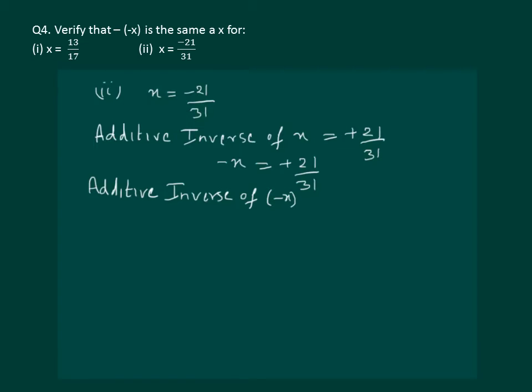Now it remains to find the additive inverse of minus x. That is we will get minus of minus x. Additive inverse of minus x is minus 21 by 31. That means minus of minus x is minus 21 by 31, which is same as x. Hence we have verified.